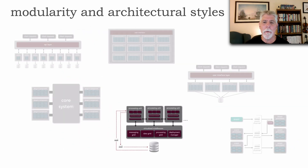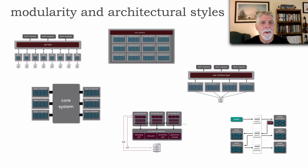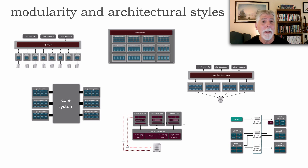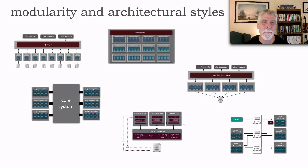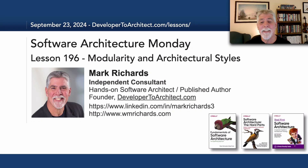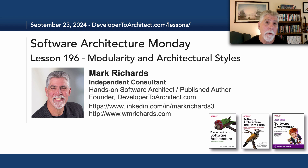And there you have it — the architectural styles that support a level of modularity, giving us increasing amounts of testability, deployability, maintainability, overall agility, scalability, fault tolerance, and overall reliability. This has been lesson 196: Modularity in Architecture Styles. Please stay tuned in two more Mondays for the next lesson in Software Architecture Monday.